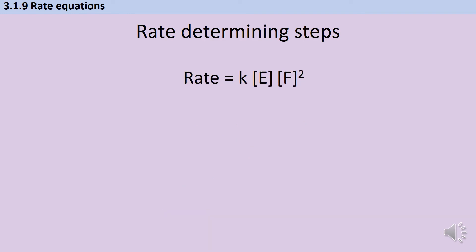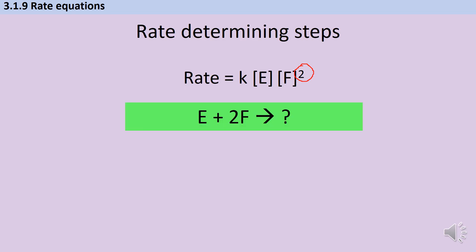There is a link between the partial orders for different reactants and the rate determining step. If I know my rate equation has a first order reactant E and a second order reactant F, then in my rate determining step I'm going to have one mole of E reacting with two moles of F. I don't know what it's going to make, but I do know that's going to be the start of my rate determining step.